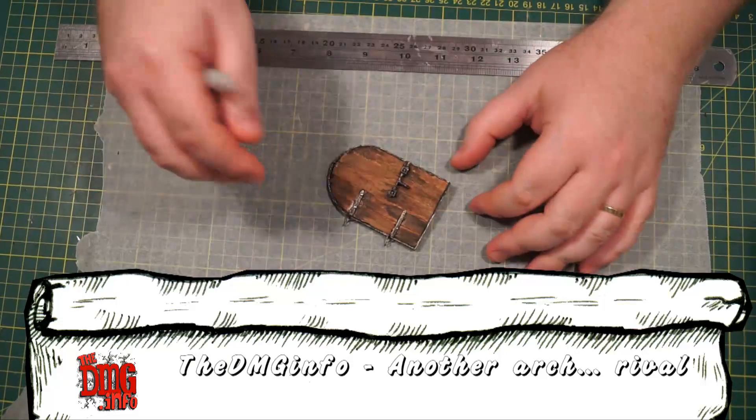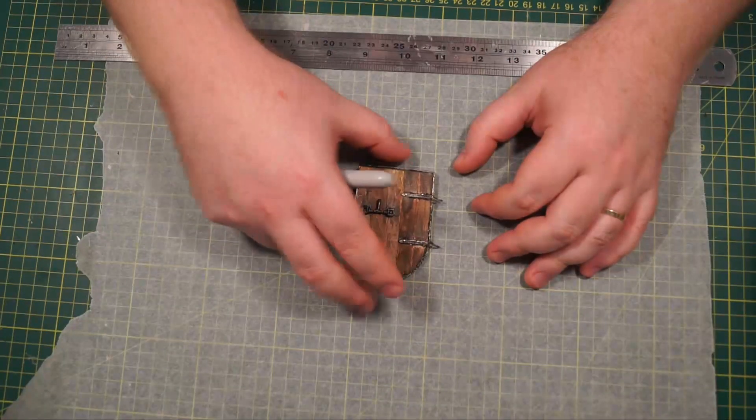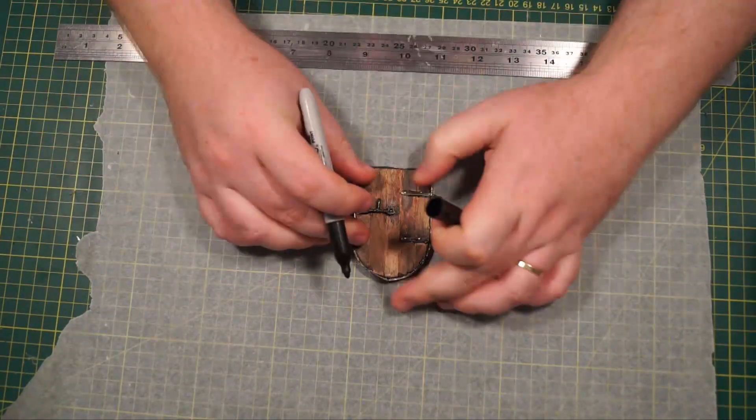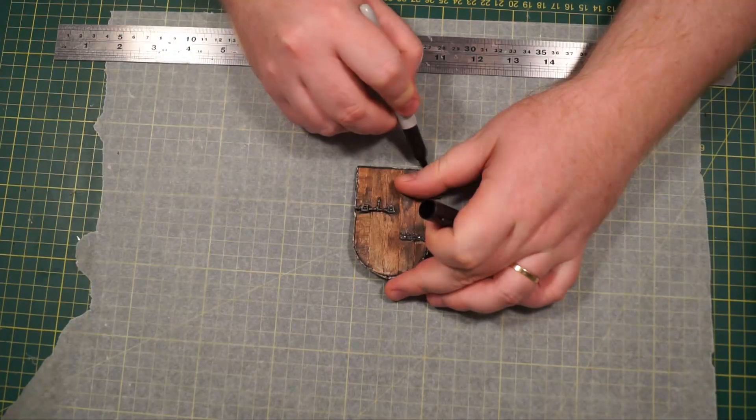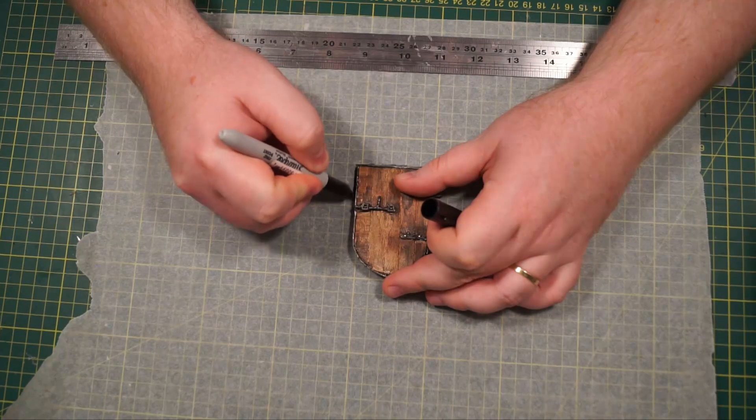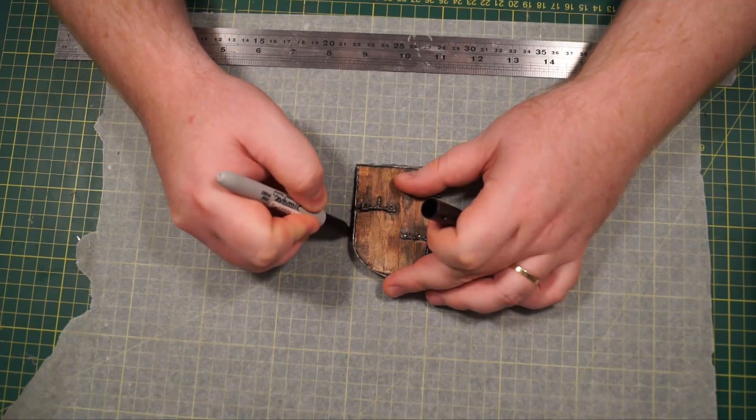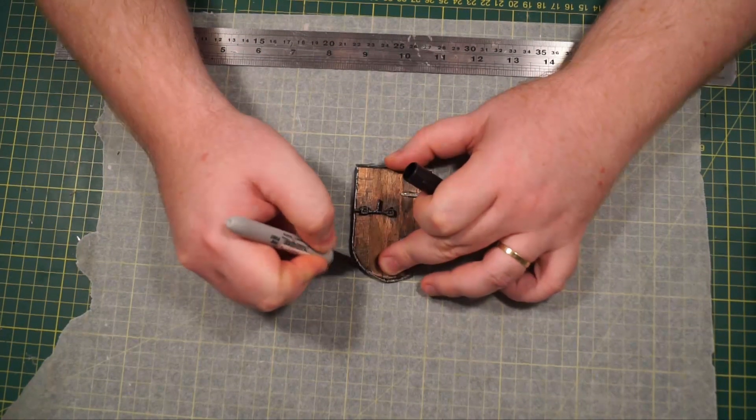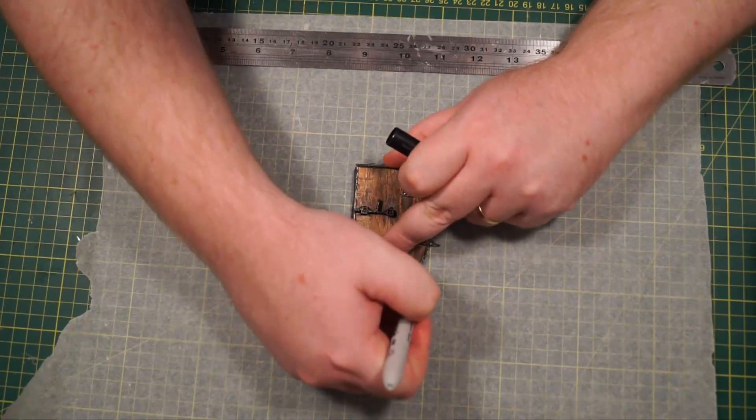Alright, so we're going to grab our door we made in the last video, video 105, and onto some baking paper, parchment paper, it might be called in America. We call it baking paper, basically it's the thing you shove in the oven that you put your chips on so you don't burn things.